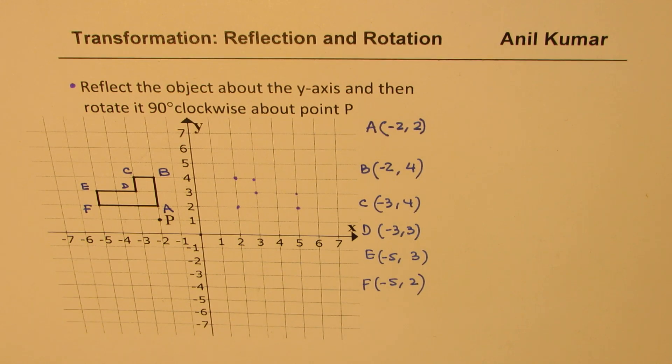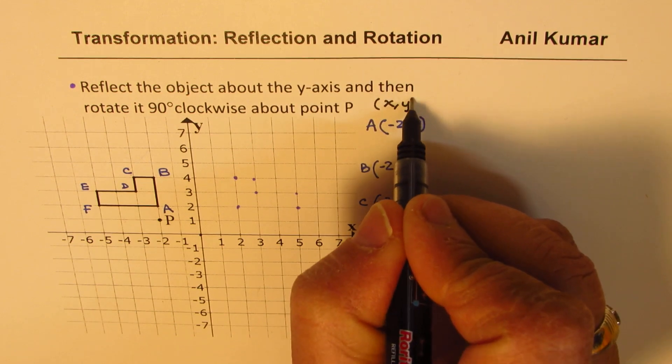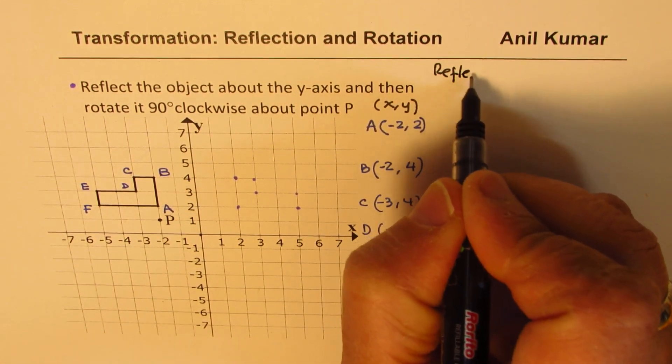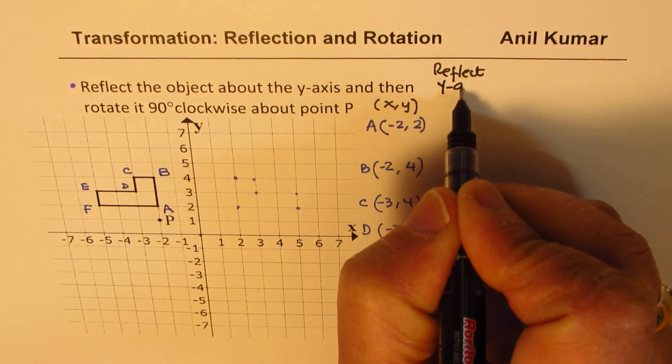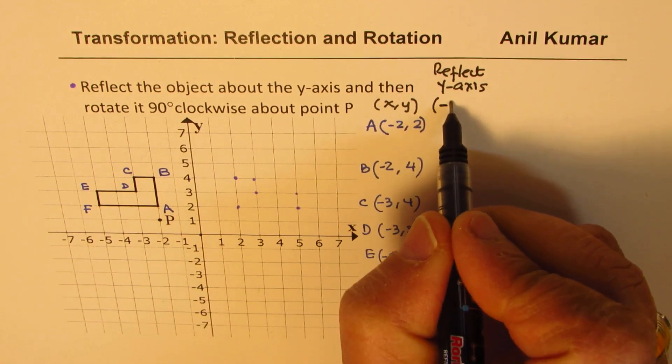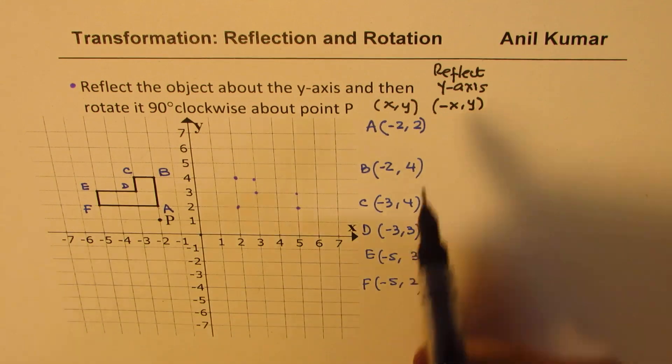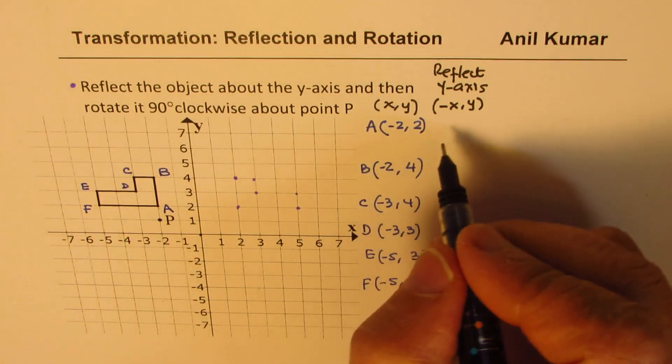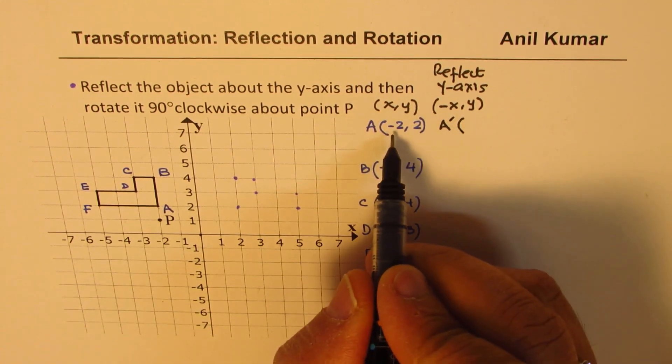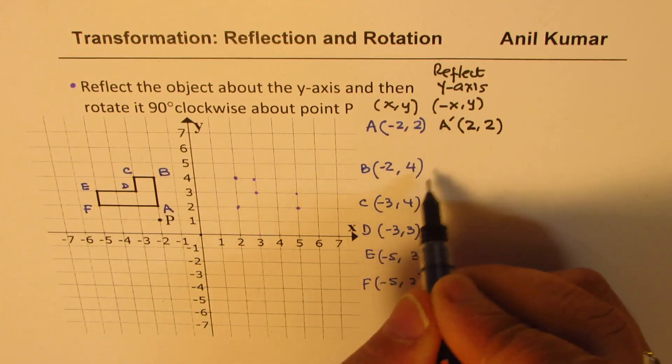We call this transformation of points. So initially, we have any coordinate x and y. Once you do this reflection on y-axis, the coordinates of x become negative, but the y coordinates remain same. So if I do the transformation, what will happen to my points? A will become A dash, and this negative value becomes positive 2. Y value remains the same.